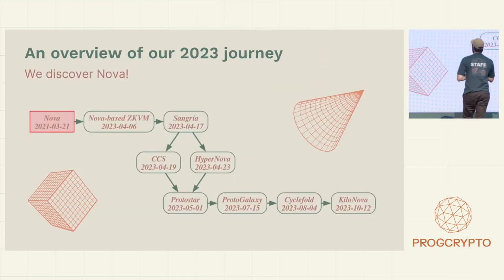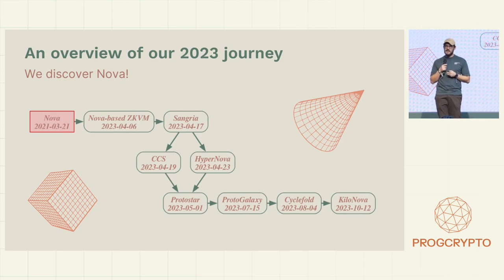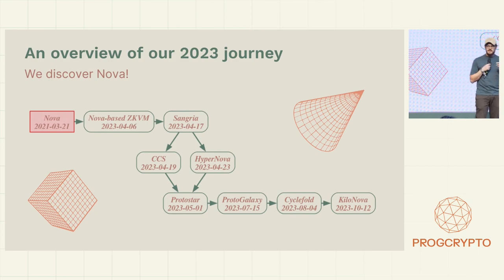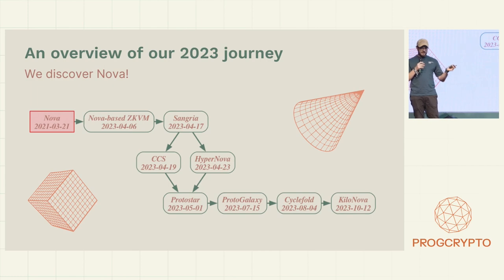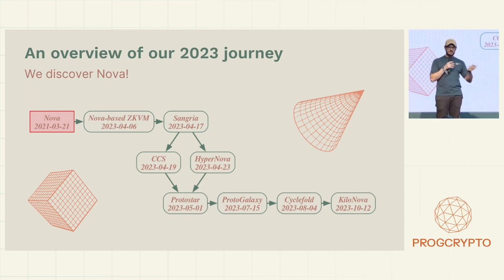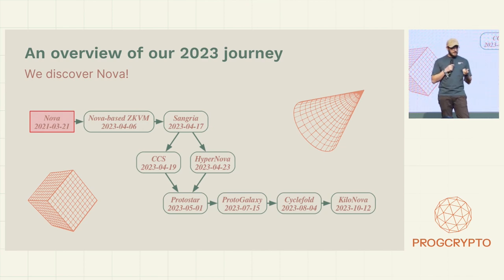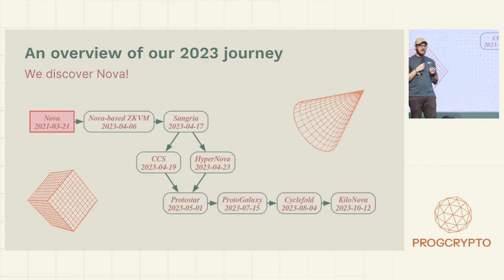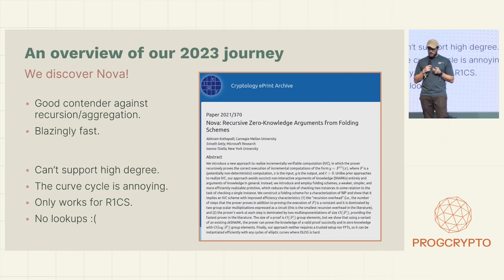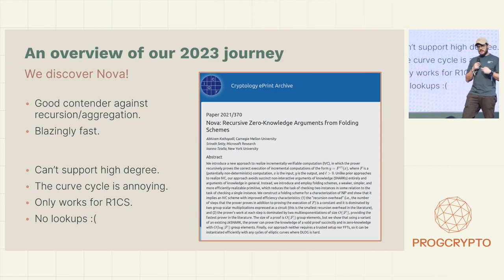We begin the year in Vietnam with PSE, and we discover Nova — actually, Nali tells us about it. And we're like, wow, you can just take actual statements and fold them as if it was a book, but the book is always one page, although it contains the same amount of information as if it was N. So that's really crazy. And we had the idea of building the ZK WebAssembly. We were thrilled. It was fast — kind of a recursion aggregation kind of thing.